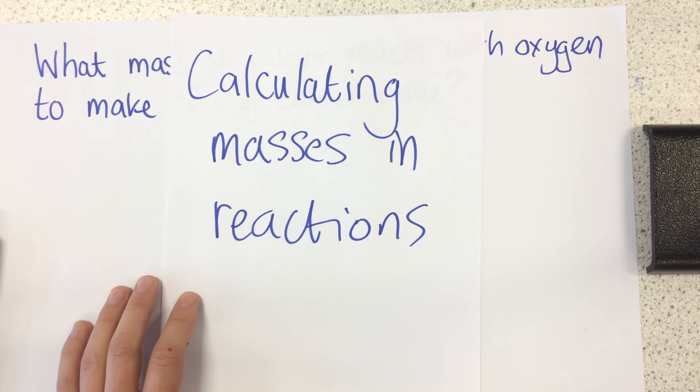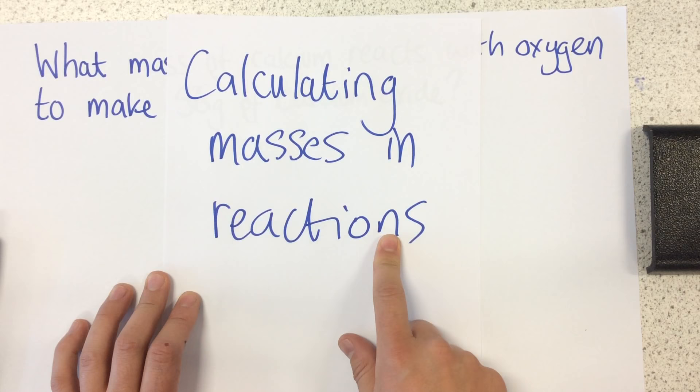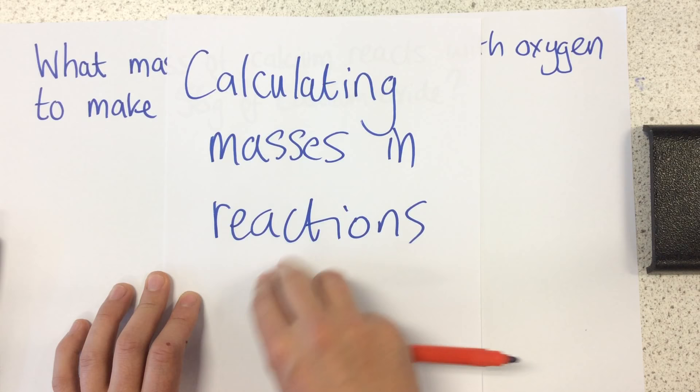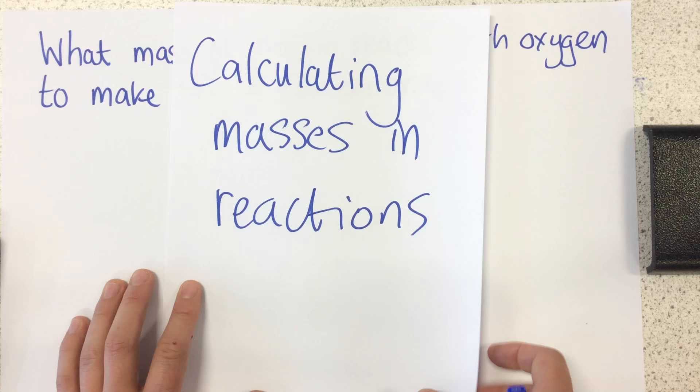Okay, today I'm going to teach you something from C2, which is about calculating masses in reactions. What this is all about is seeing how much of a certain substance is required in order to make another substance. And we can do this using the periodic table and some calculations.